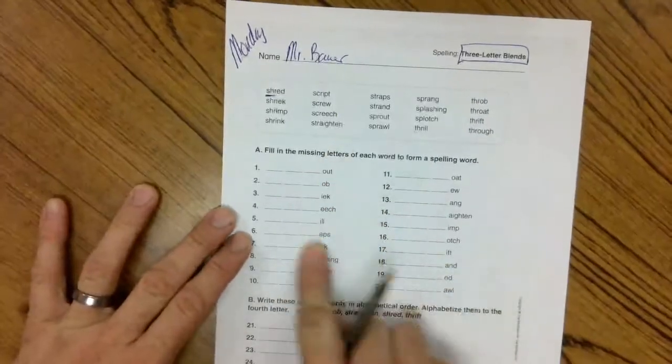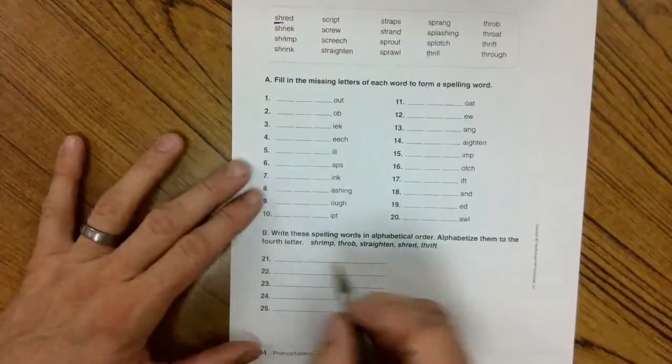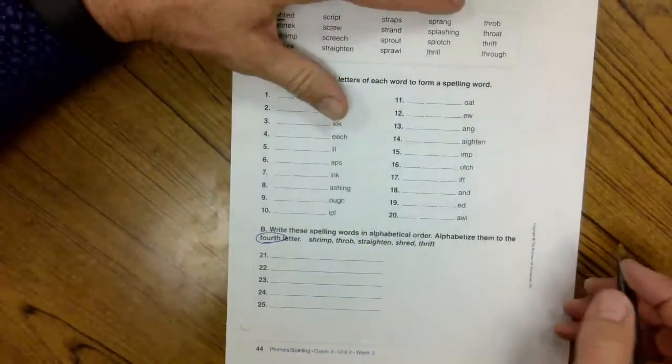So you're going to pick the three that go in front of those, cross them out as you go, and then down at the bottom you're going to alphabetize them to the fourth letter. And that's only after you do the first letter.